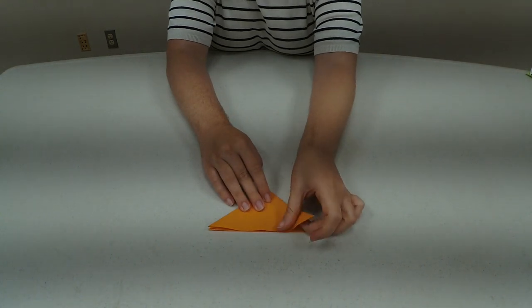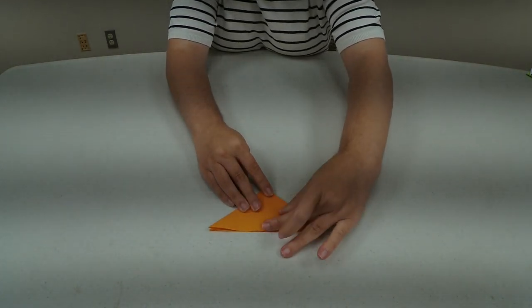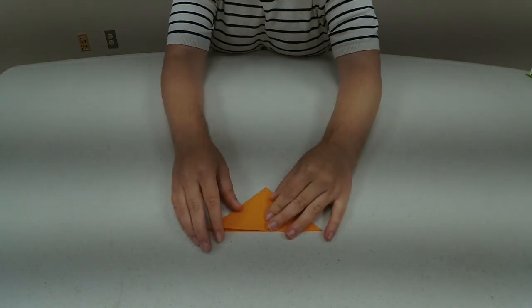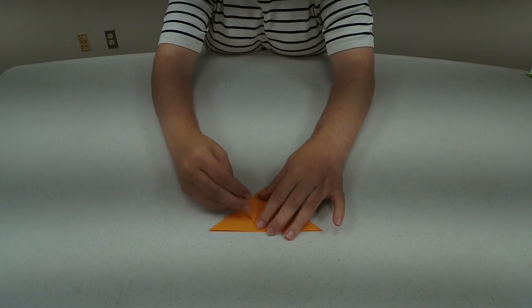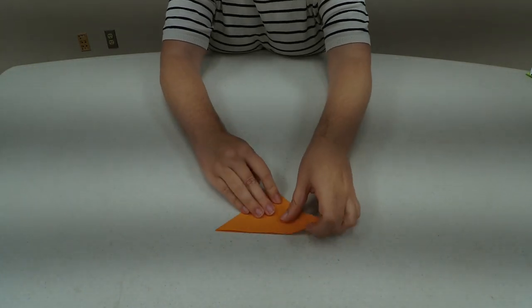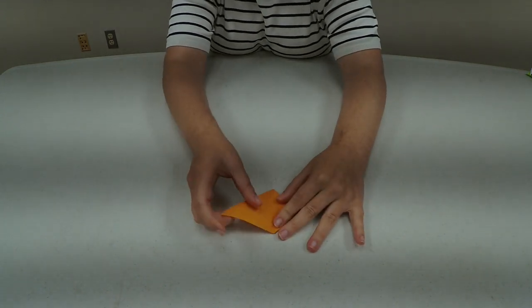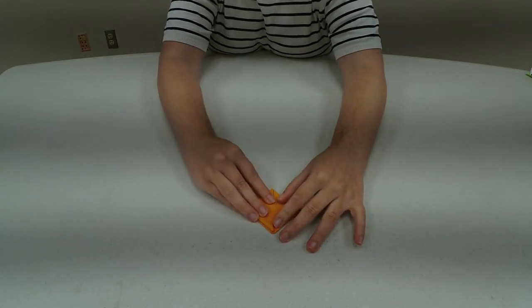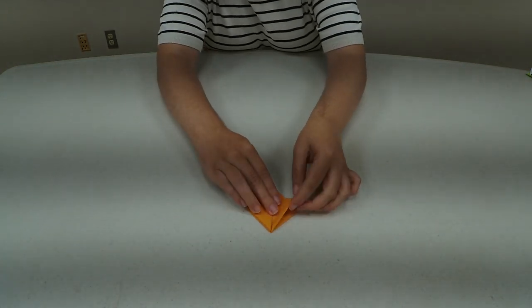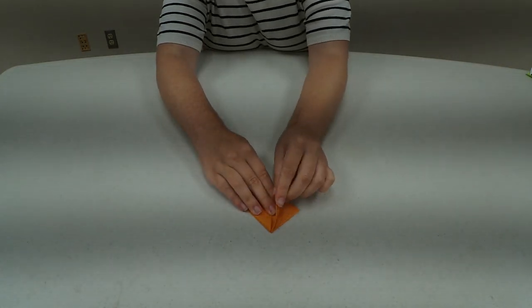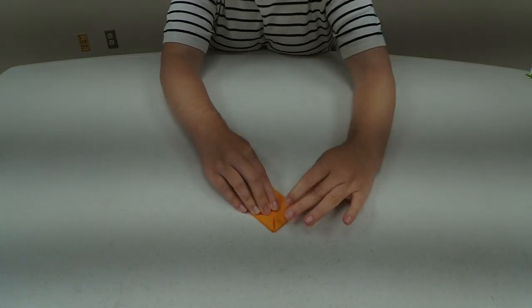So from here, you're going to take each corner flap and fold it into the center. And then you're going to flip it over and do the same on the other side. Then you're going to take each flap again and fold it to the center.